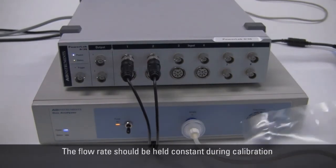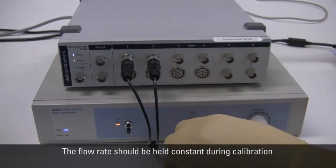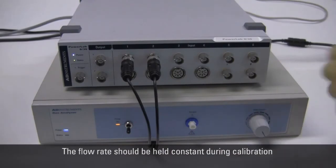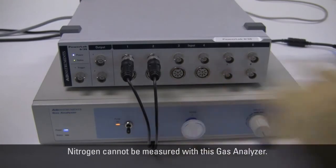The flow rate of the sample gas should be held constant during calibration as the CO2 reading is affected by the pressure and flow rate. Please note that nitrogen cannot be measured with this gas analyzer.